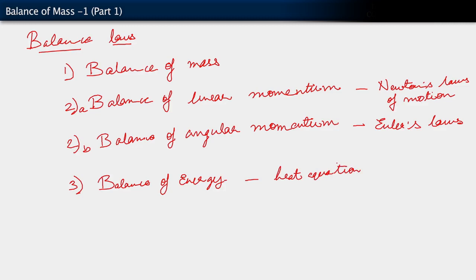The balance of energy is what gives rise eventually to things like the heat equation. And to complete this, I should also mention that the balance of mass — the very first of these — is what gives us the framework in which things like Fick's laws of diffusion are posed. So we'll start at the top: we are going to start with the balance of mass in the continuum setting.